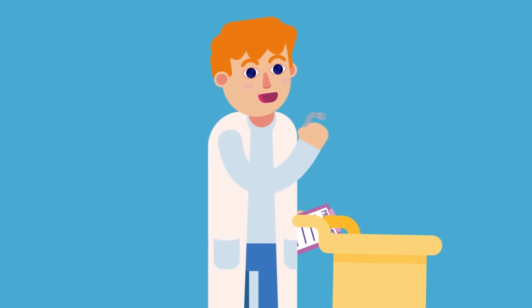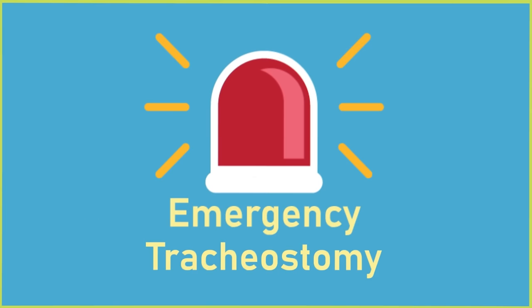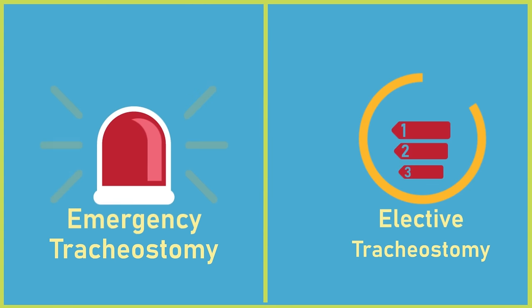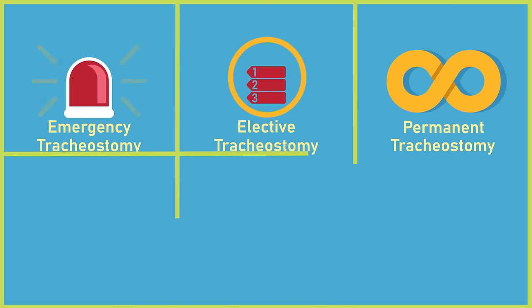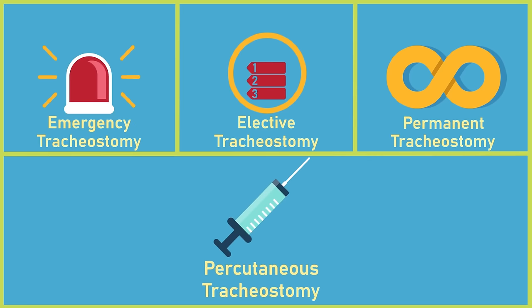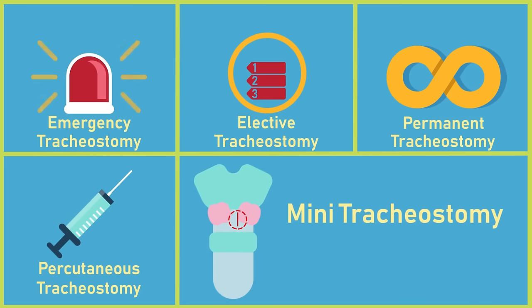The common types of tracheostomy procedures are: emergency tracheostomy, elective tracheostomy, permanent tracheostomy, percutaneous tracheostomy, and mini tracheostomy also known as cricothyroidotomy.